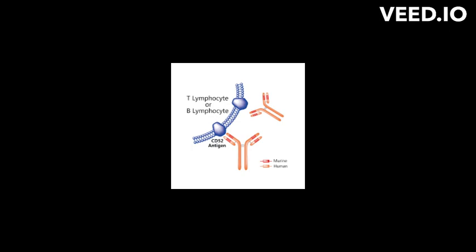Alemtuzumab is primarily used to treat B-cell chronic lymphocytic leukemia, CLL, a type of cancer that affects a type of white blood cells called B-cells. By targeting and destroying B-cells, alemtuzumab can help to slow the growth and spread of CLL.